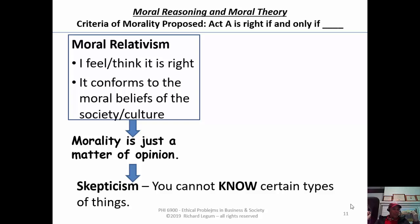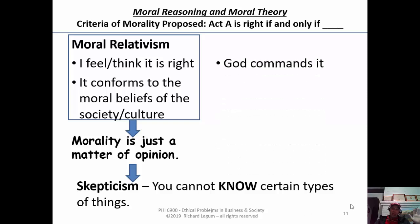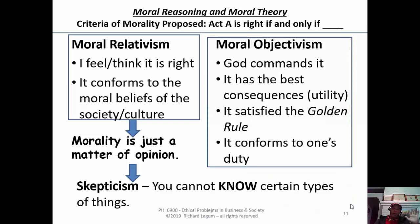There are other problems with the fact that it leads to skepticism. Maybe there is no right and wrong — that's a position called nihilism. But this is a more moderate position: you just can't know certain things about morality. When we looked at this, I said there were a couple of other theories that were really versions of moral objectivism — that there is a right and wrong, it's not relative, and furthermore you can know these things.